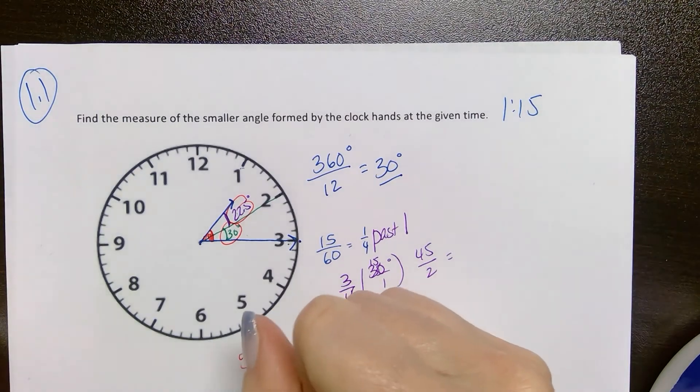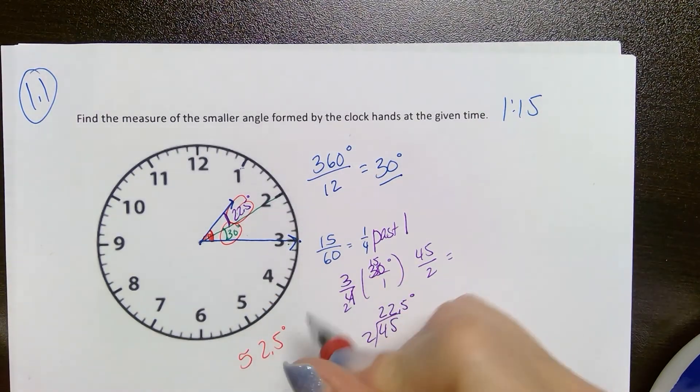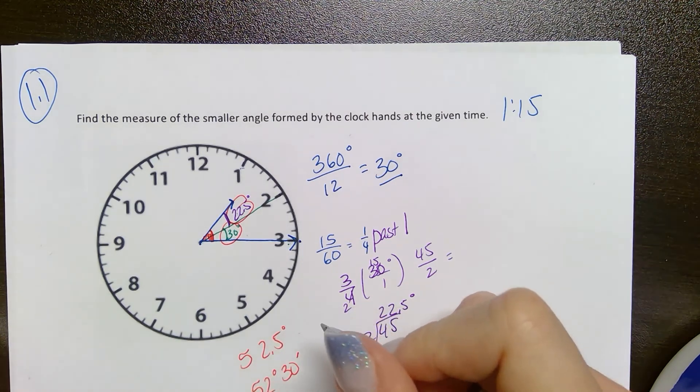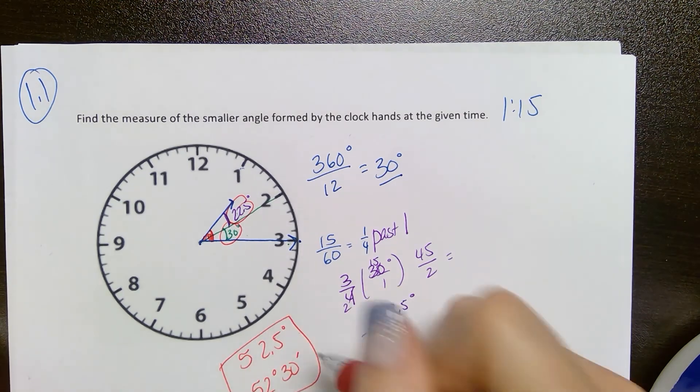is 52 and a half degrees. If I need to write that in degrees and minutes instead of decimal degrees, it's 52 degrees 30 minutes because 30 minutes is half of a degree.